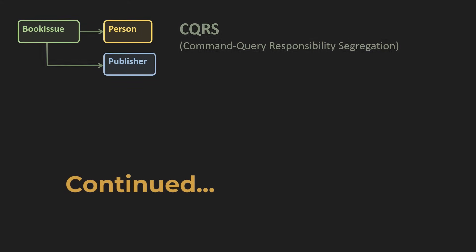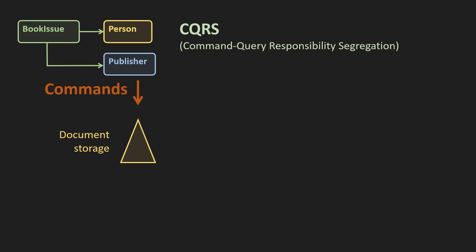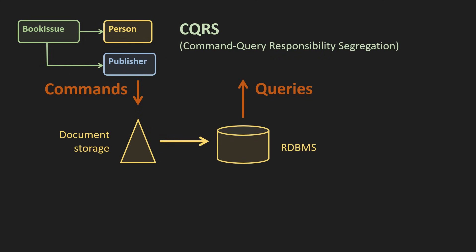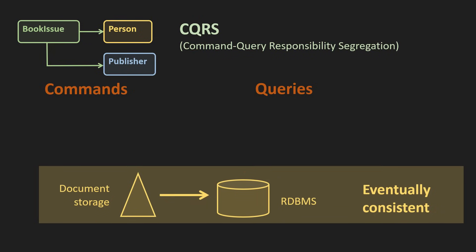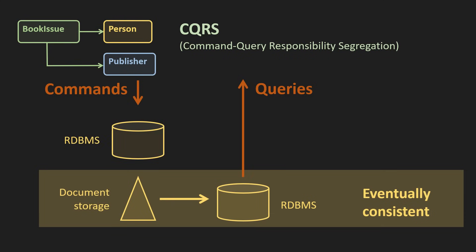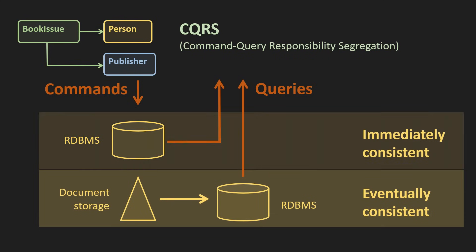Enter CQRS — the Command Query Responsibility Segregation — one of the fundamental enablers when dealing with data. Let aggregates streamline the commands but leave queries as a separate aspect. We may store the aggregates in document storage which does not support versatile queries — no problem. Store the data again in a relational scheme and then apply SQL to query them efficiently. This looks eventually consistent, but it doesn't have to be.